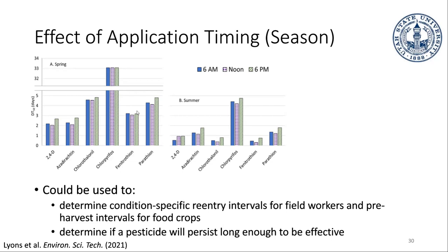We also looked at different times of day, since different times have different temperatures and levels of sunlight, which affects how long the pesticide sticks around before it evaporates or breaks down from sunlight. This is important for worker safety. When you spray a pesticide, you're not supposed to re-enter that area for a given amount of time unless you're wearing certain protection — PPE like respiratory equipment and gloves, so you don't get the pesticide on your skin or breathe it in. This could be a tool for identifying what those re-entry intervals should be, since currently they're just generic — like 24 or 48 hours — not specific to actual conditions.